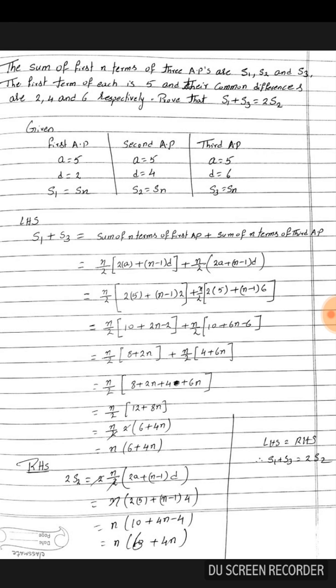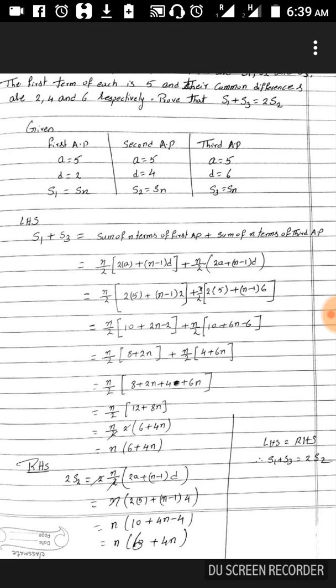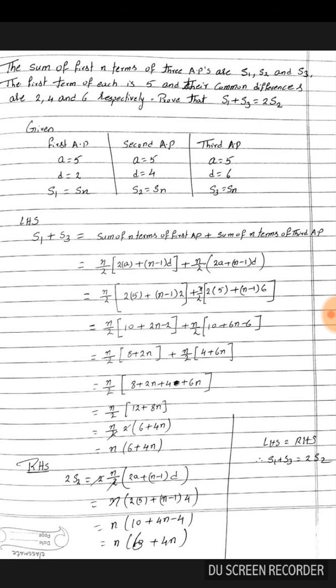Now each first term is given as a equals 5 and the common differences are given as 2, 4, 6. So I have written here 3 APs: the first AP whose first term is 5 and common difference is 2, the second AP whose first term is a equals 5 and common difference is 4, and the third AP whose first term is a equal to 5 and the common difference d is equal to 6.